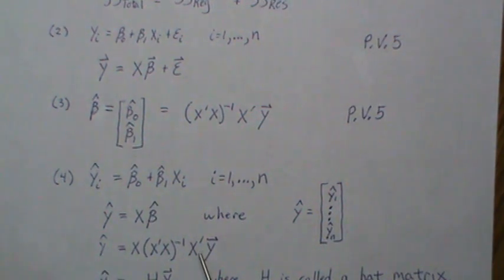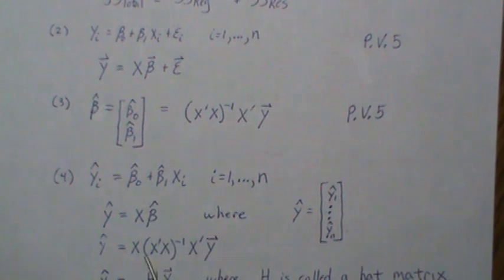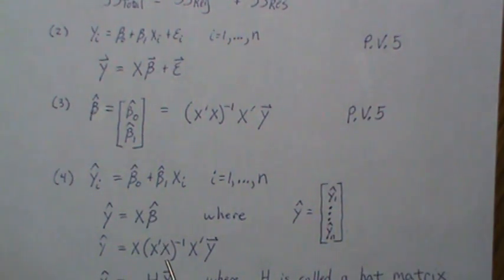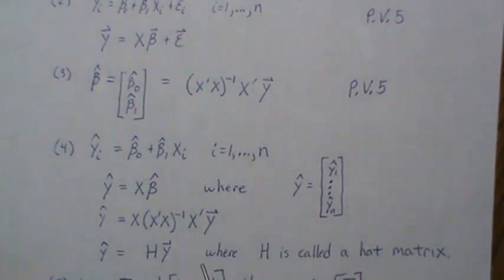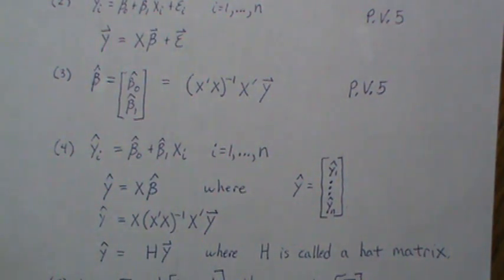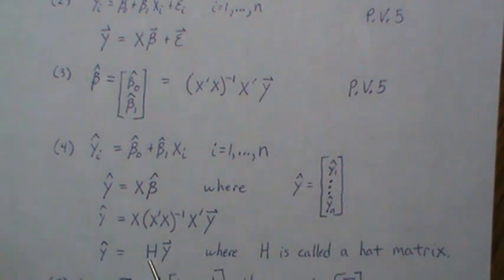Let's think about this a little differently. Instead of X times the least squares estimate, we're going to think about it as this matrix times y. So X(X'X)⁻¹X' — we're going to call that H. It's generically called the hat matrix, because this vector y, if you pre-multiply it by H, you put a hat on y. It gives the fitted values, so it's the hat matrix.